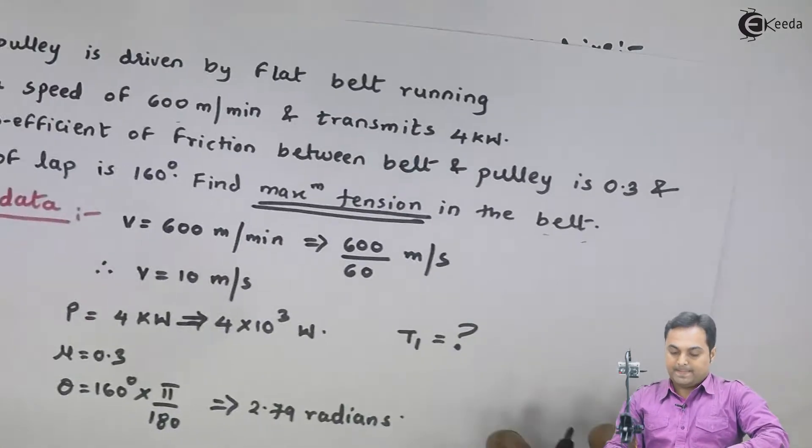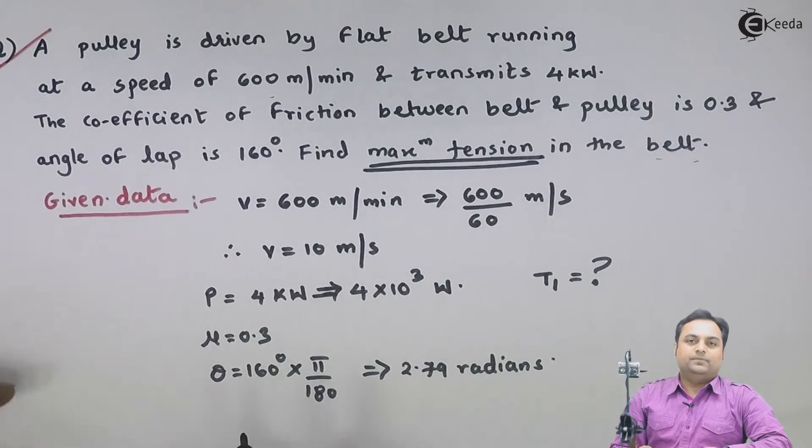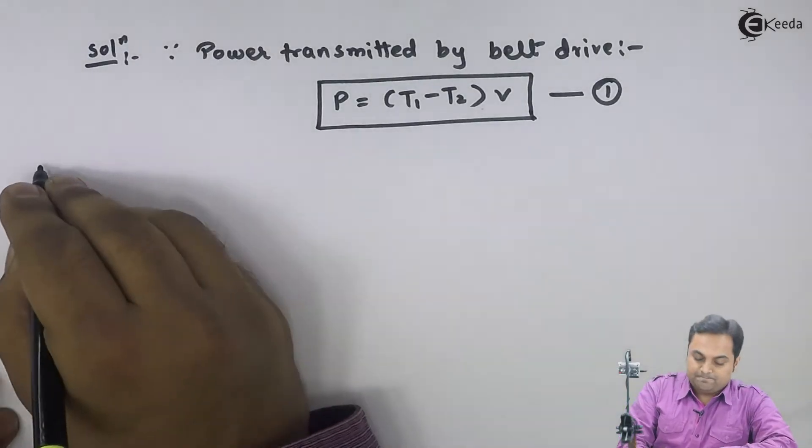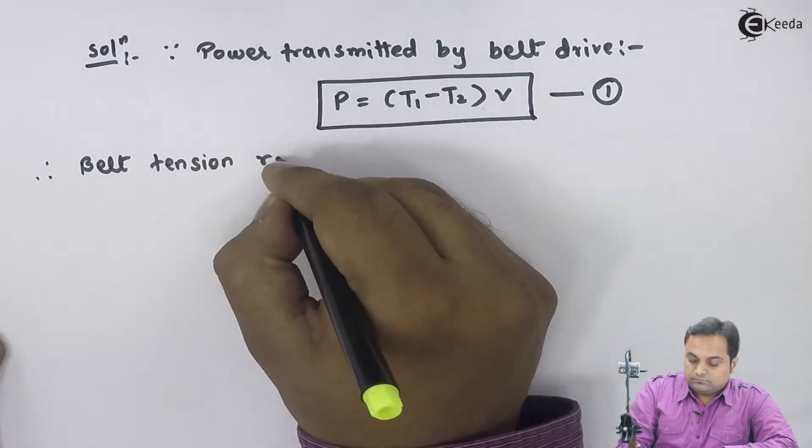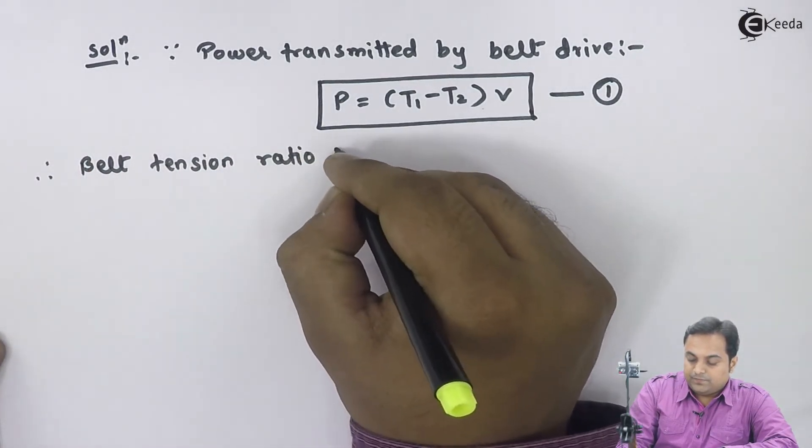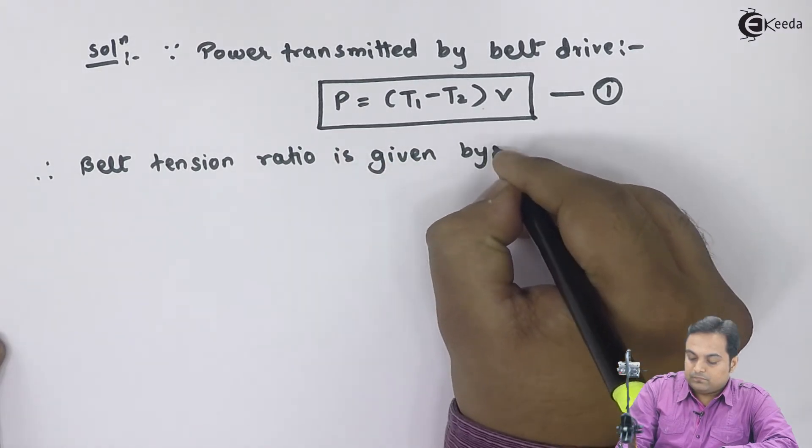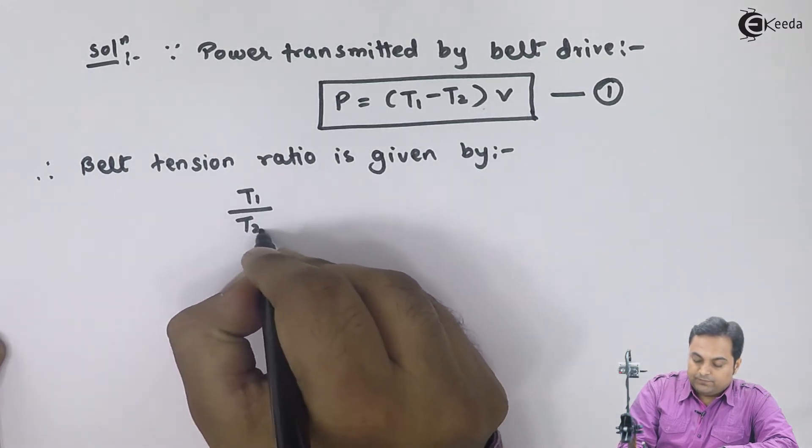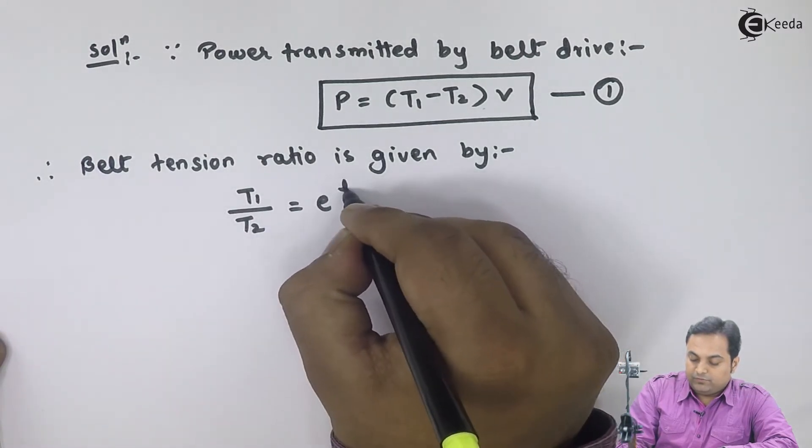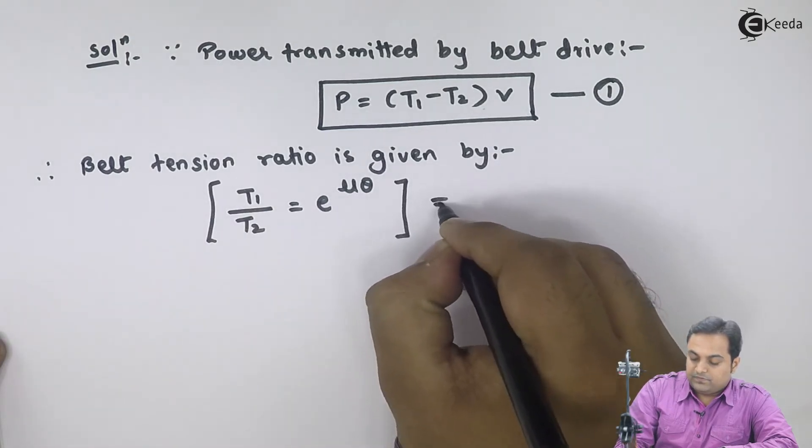Next, since mu and theta they are given, I will use the belt tension ratio. The belt tension ratio is given by T1 upon T2 equals e raised to mu theta.